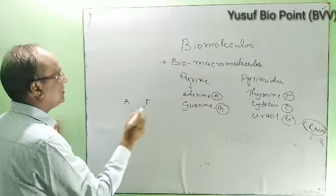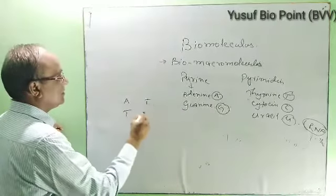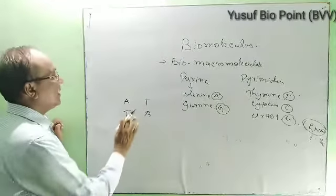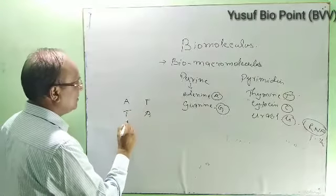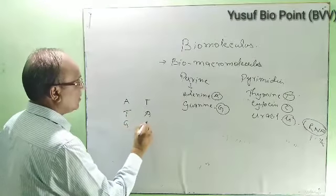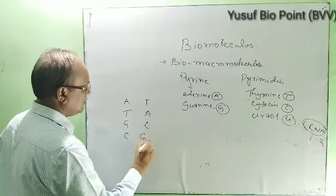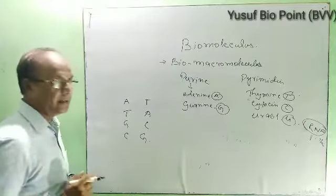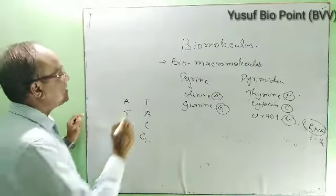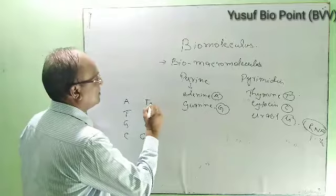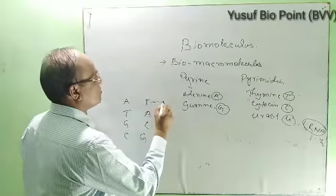In DNA, the bases are arranged as adenine, thymine, thymine, adenine, guanine, cytosine, cytosine, guanine — and these are connected by sugars on both sides.